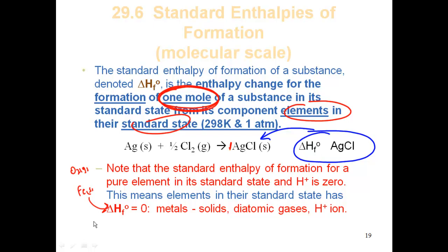We do the same thing in solutions, except our reference point there is H⁺. The hydrogen ion concentration — aqueous hydrogen ion — is zero delta HF. So if we're talking about ions, our reference is H⁺ is zero delta HF. If we're talking about elements, that's zero as well. This is all on a relative scale, not an absolute scale — relative to these things that we are calling zero.